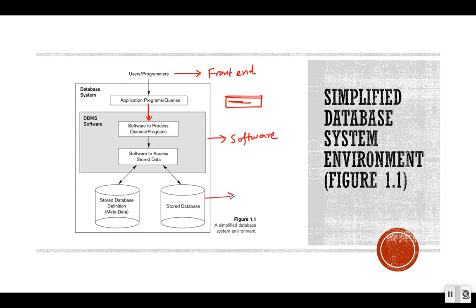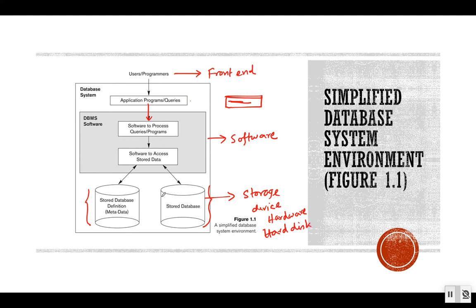The DBMS software accesses the data and stores it in some storage device — a secondary storage device such as a hard disk, which is part of the hardware. So we have the stored data on hardware, the DBMS software on top, and the application programs and interfaces through which users access the database. All together, this is our database system.